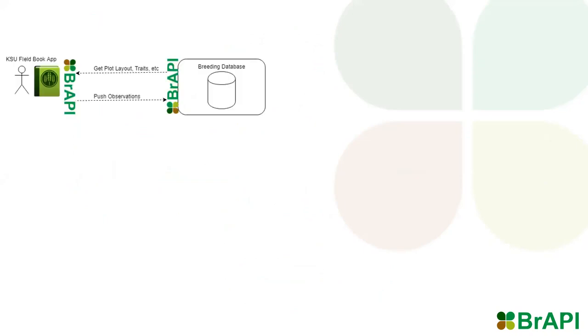BrAPI is being used to solve many different use cases by many different groups around the world. Here are a few examples being actively developed within the BrAPI community. With mobile data collection apps, like the KSU Fieldbook, we can download plot layouts and traits directly from a BrAPI-compatible database into a field device. Then, when data collection in the field is finished, we can upload observation data back into that database.